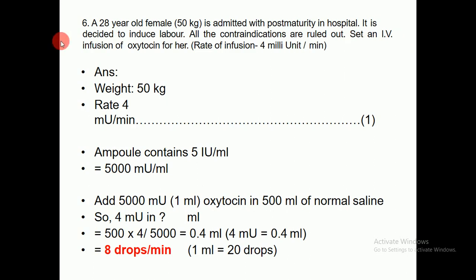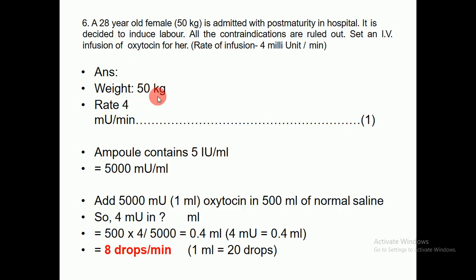Certain IV infusion of oxytocin is ordered while the rate of infusion is 4 milli-units per minute. How can we calculate it? First of all, write down the weight of the patient, which is 50 kg, age is 28 years, and the rate is 4 milli-units per minute. This is our equation.